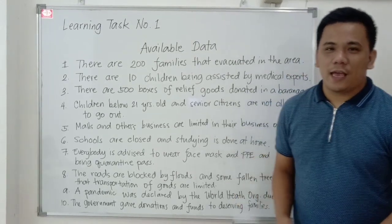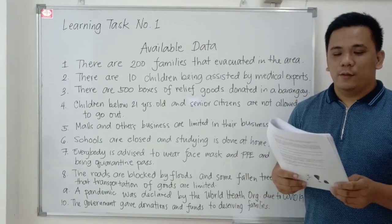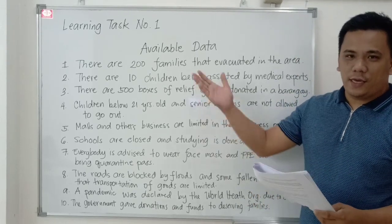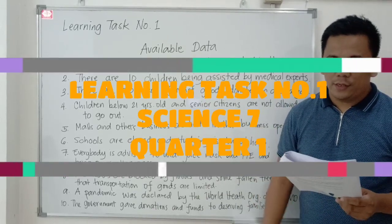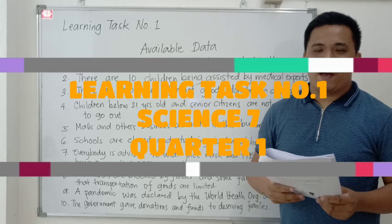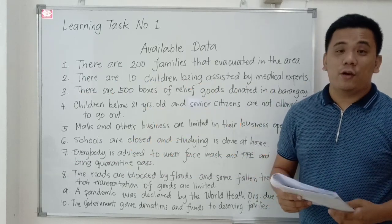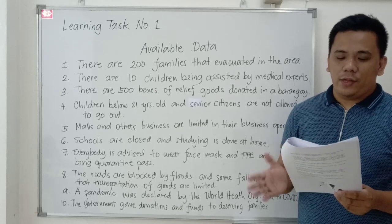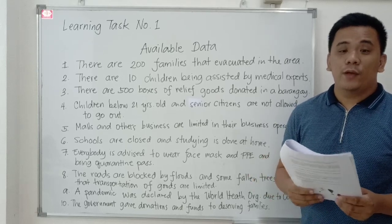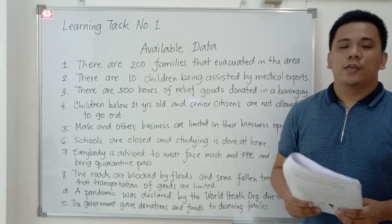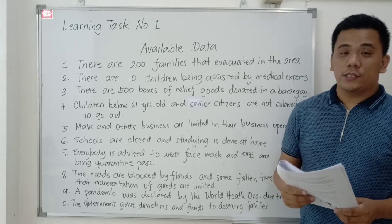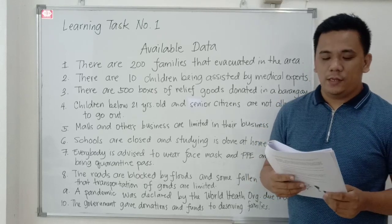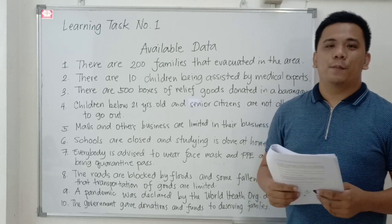To continue our discussion, we will do Learning Task Number One. Refer to the given data written on our board and write possible problems based on the given data. Choose at least three available data that will support your answer from the choices in Column B. Write your answer on a separate sheet of paper.